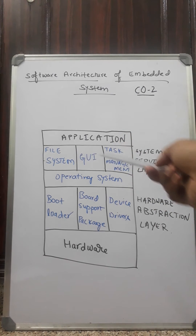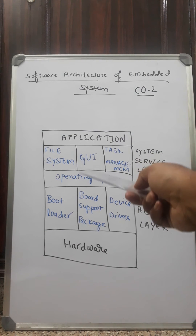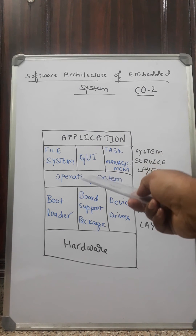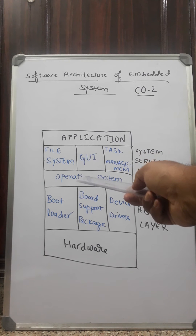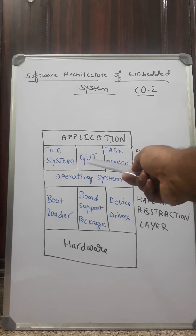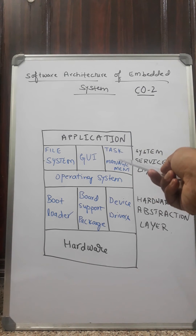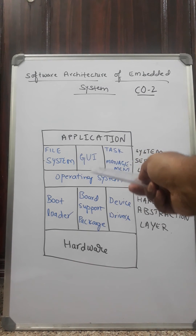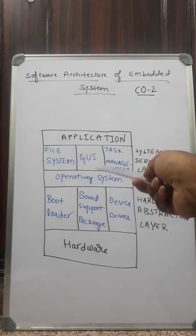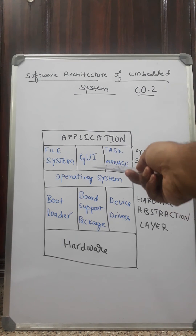Coming to the file system, it is software which enables organizing or storing information. Coming to the GUI — graphical user interface — it gives interaction to the user in the form of visuals about its color, size, form, etc.